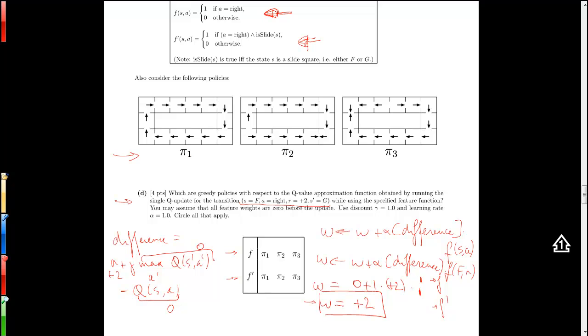And being greedy with respect to F prime, when we use the feature function F prime, means that whenever there's a slide and there's an action right available, we have to take it. Otherwise everything is equal. So let's look at this one first. The greedy policy with respect to the Q function with feature F, we always need to select the right action whenever the right action is available.